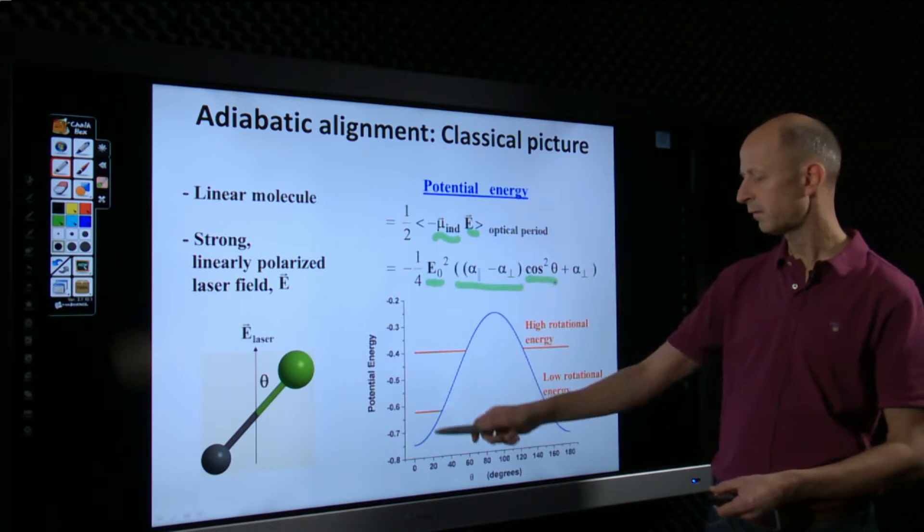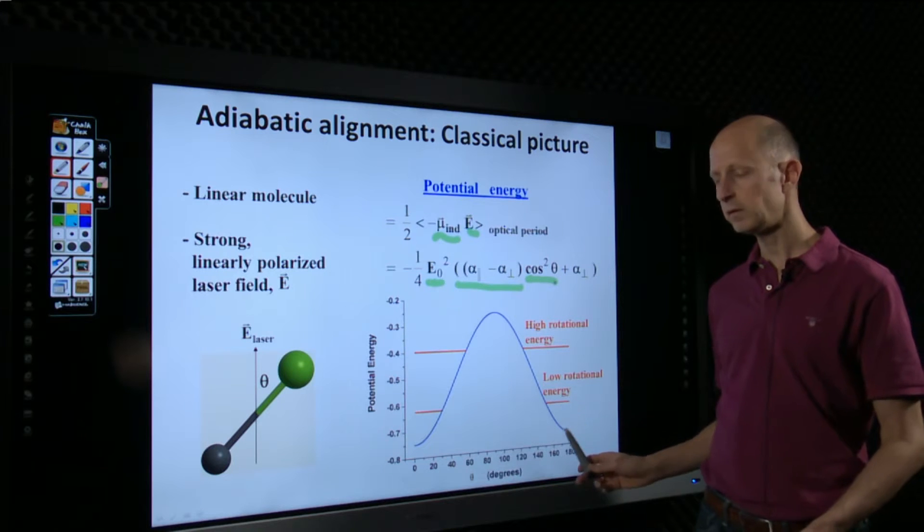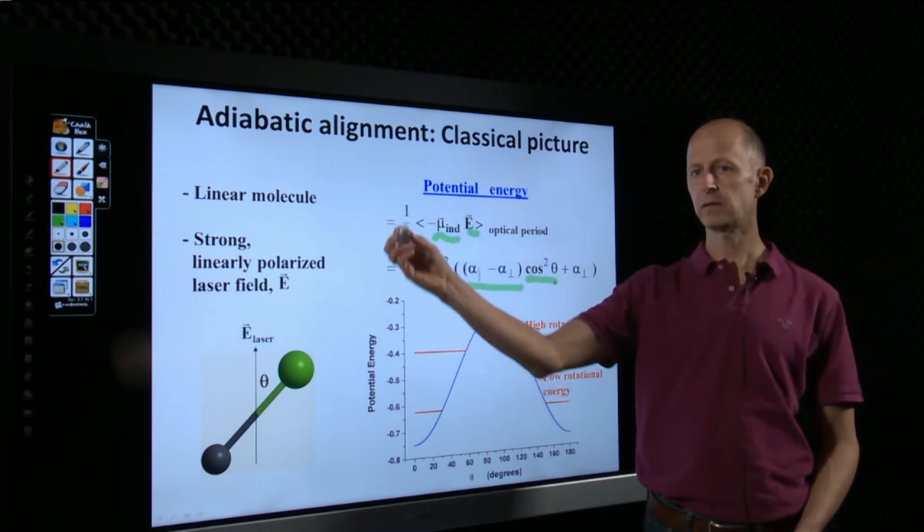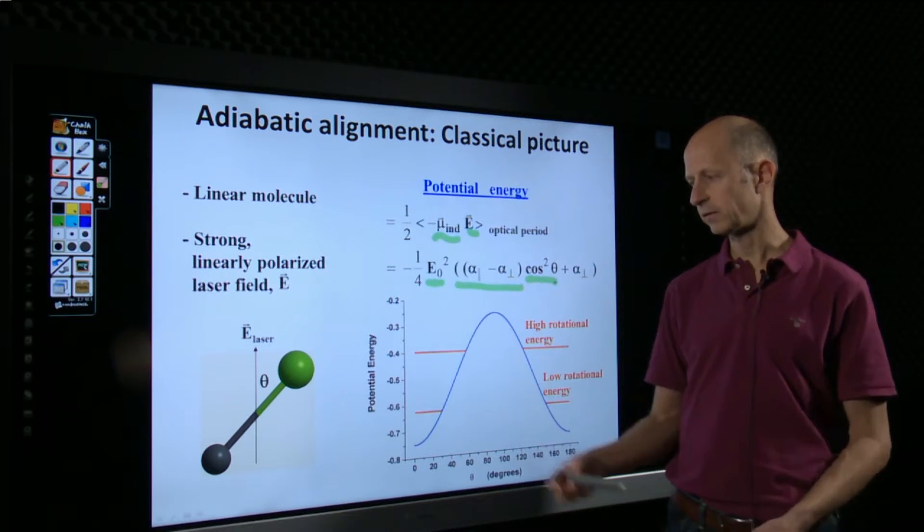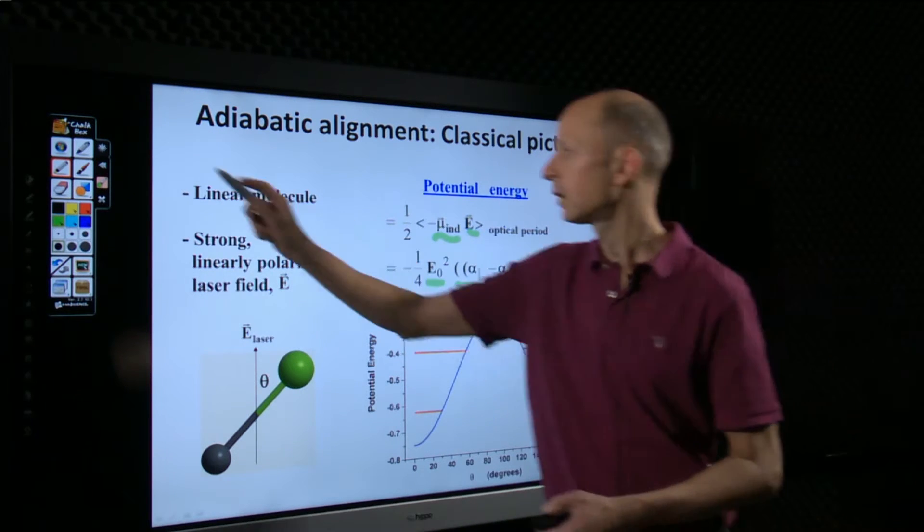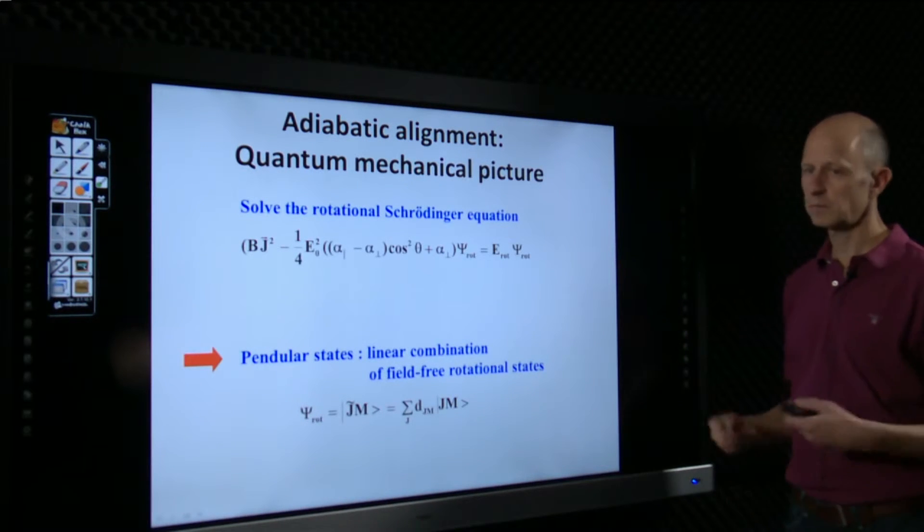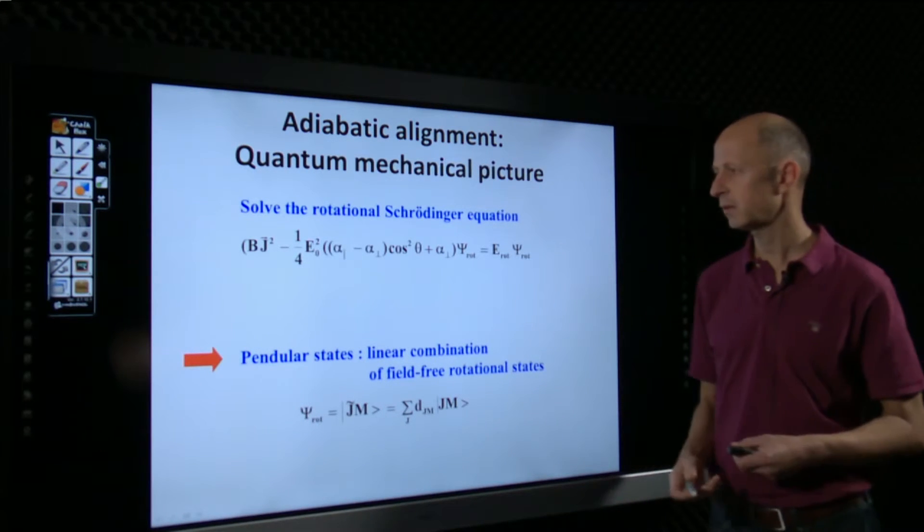That interaction energy is plotted by the blue graph here. So, energy versus angle. And you can see there's a minimum at zero and at 180 degrees. So, the molecule wants to be like this, or like this. It aligns. So, this is the basic principle of adiabatic alignment.